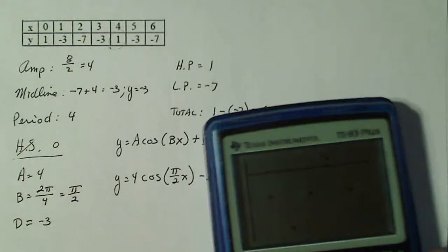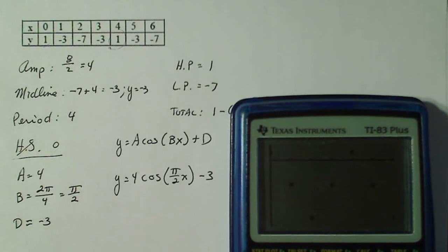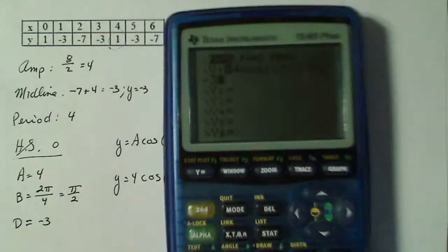Now, let's see if that actually fits the data. So here's my plot. I'm going to go to my y equals and type in four cosine pi divided by two times x minus three. Let's see if you can see that there.